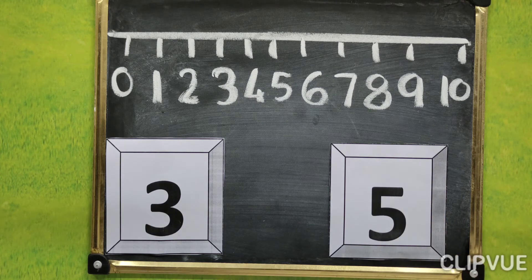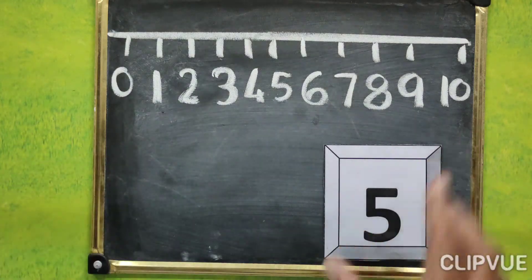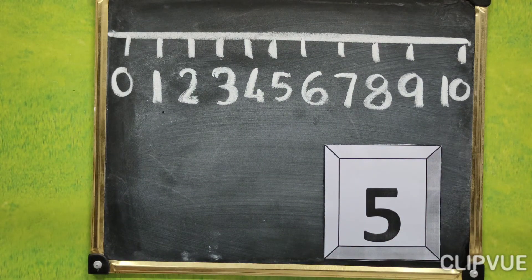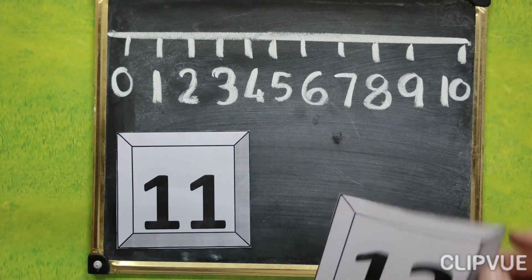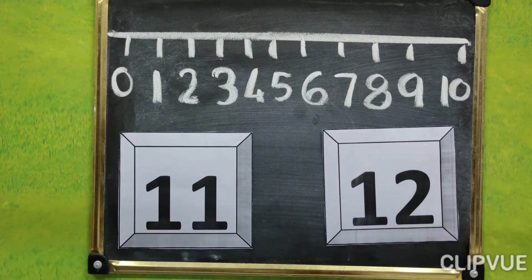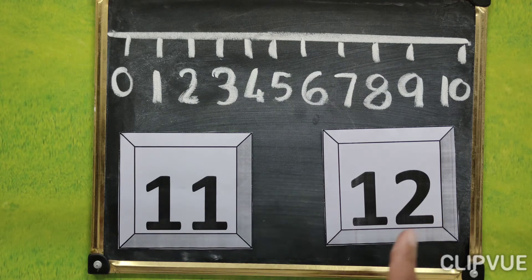We see second example. Look at here. Which number is this? 11. And which number is this? 1 to 12. 11 and 12.